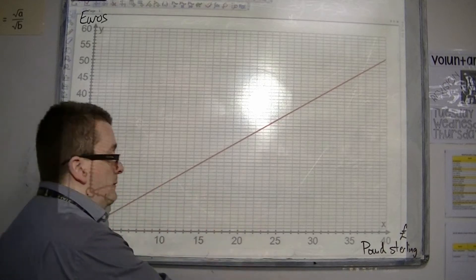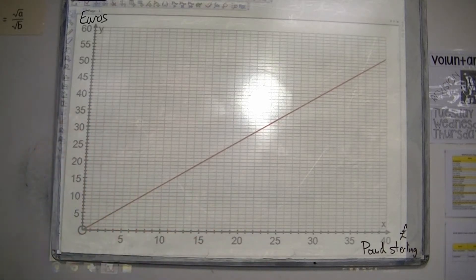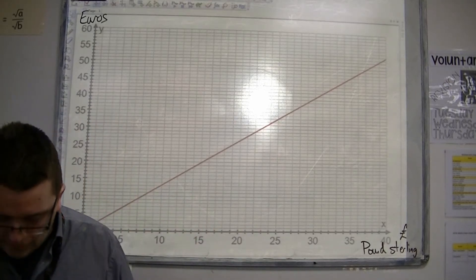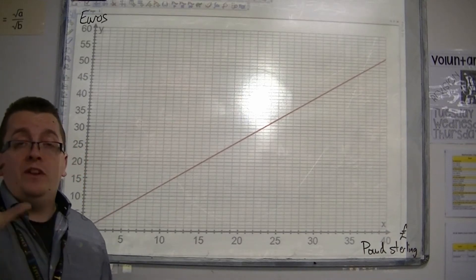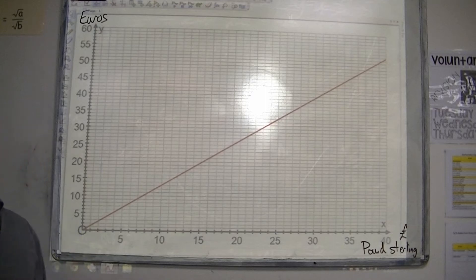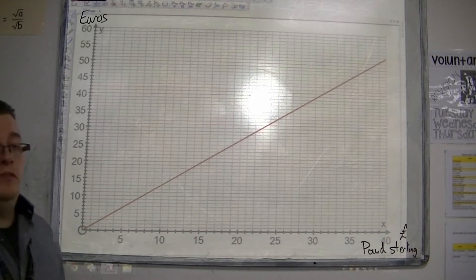Okay, so UK pounds into European euros. And a conversion graph may be used also for temperature, for centigrade into Fahrenheit, or miles into kilometres, for example, and different quantities like that.